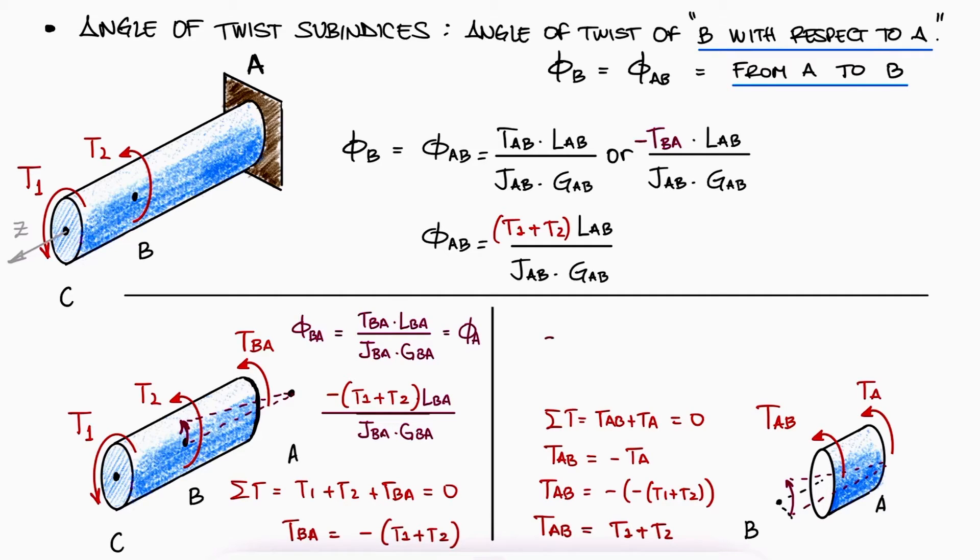So even if we're looking for phi B, we can use phi BA to find phi A, and since A is really not rotating, phi B would be the negative of phi A, which is consistent with what we found before.